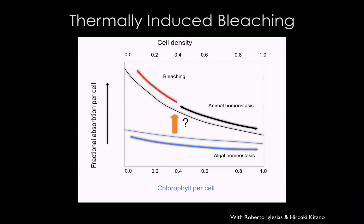Here you see a figure that depicts what happens in bleaching at the physiological level. On the y-axis, you have photosynthesis and absorption per cell — you're looking at the photosymbiont physiological activity. On the bottom x-axis, you see the amount of pigment per algal cell, which is a trait that is quite plastic and is controlled by the alga. On the top x-axis, you see algal cell density inside the host tissue, which is controlled by the animal. There is an intricate crosstalk that takes place, with a lot of phenotypic plasticity as they adjust to different seasons and different depths in the field.